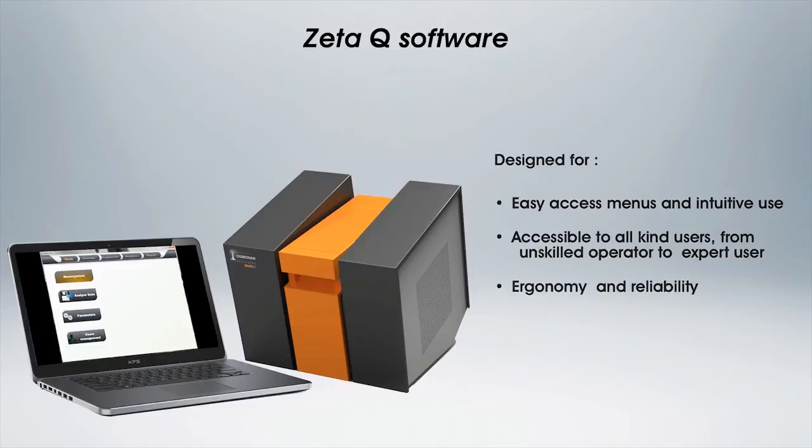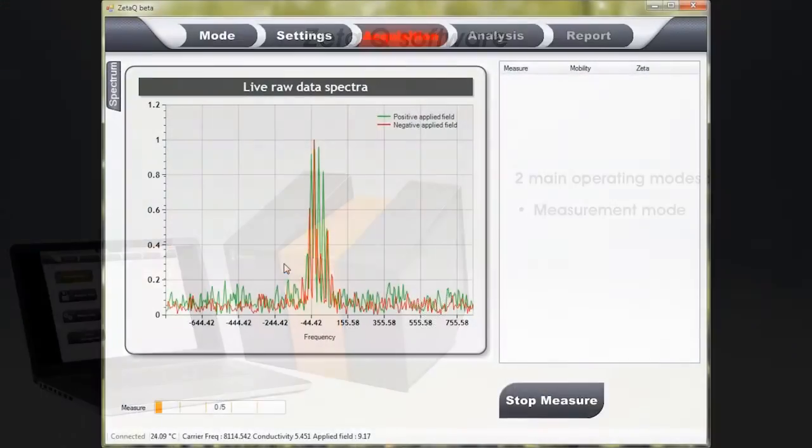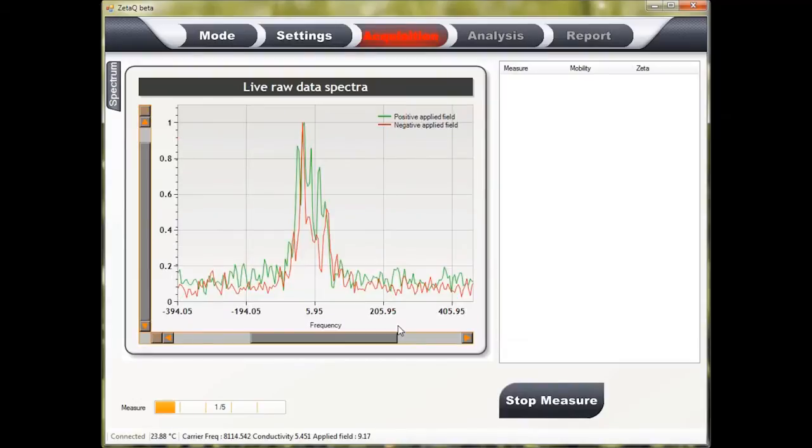Zeta-Q proposes two main operating modes. The measurement mode allows starting a measurement in few clicks either in a continuous way or in a multi-acquisition session for size kinetic study.